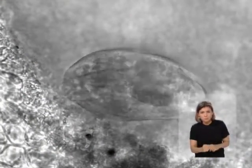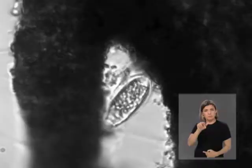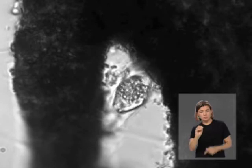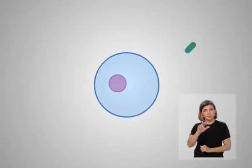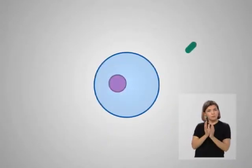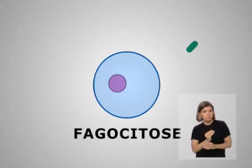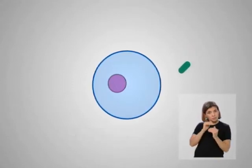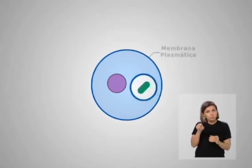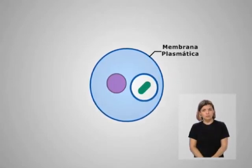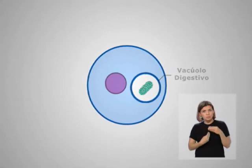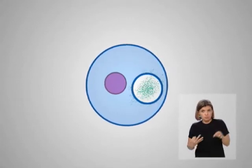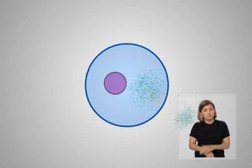Nem todos os seres microscópicos possuem sistema digestório — é o caso dos paramécios e de outros organismos unicelulares. Os paramécios se alimentam de bactérias, algas e leveduras por um processo conhecido como fagocitose. Nesse processo, as partículas de alimento são englobadas através da membrana plasmática. Uma vez dentro da célula do paramécio, o alimento é colocado em um vacúolo digestivo, onde será digerido por enzimas. Quando a digestão termina, os resíduos alimentares são jogados para fora da célula.